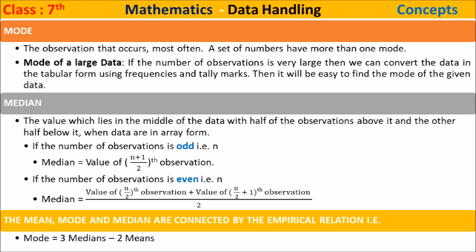Median is the value which lies in the middle of the data, with half of the observations above it and the other half below it. For an odd number of observations n, median equals the value of the ((n+1)/2)th observation.